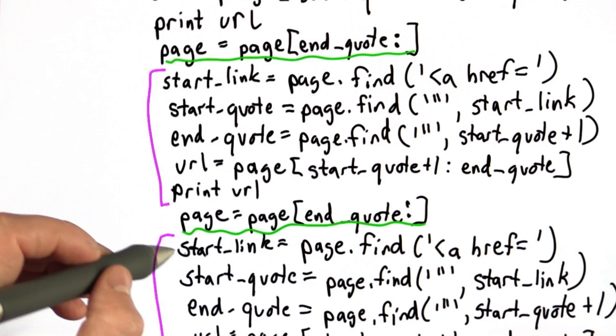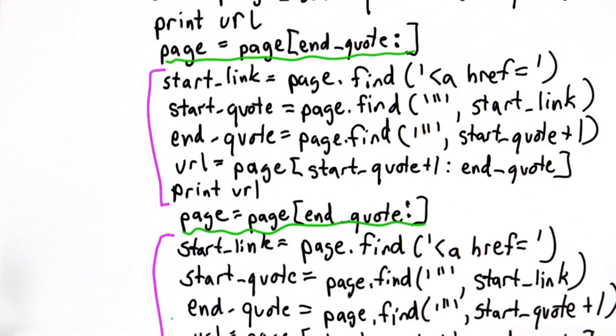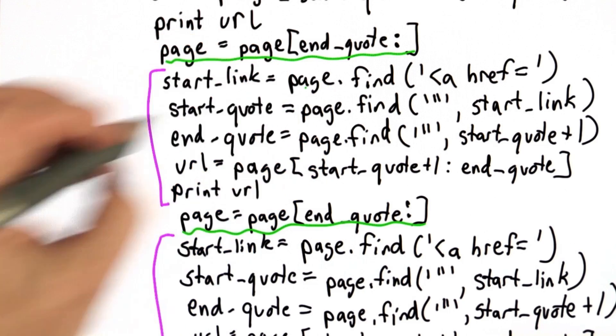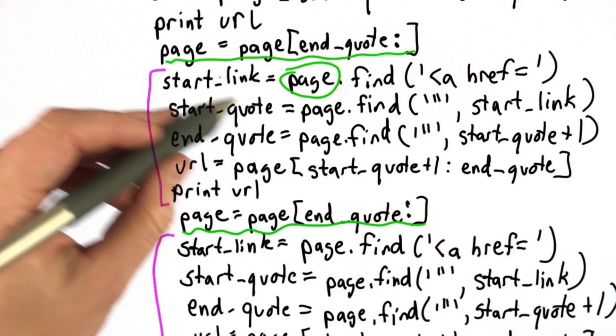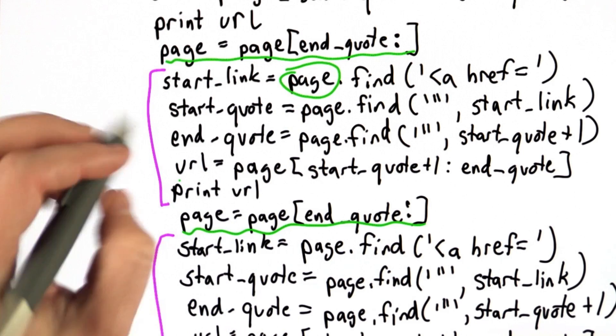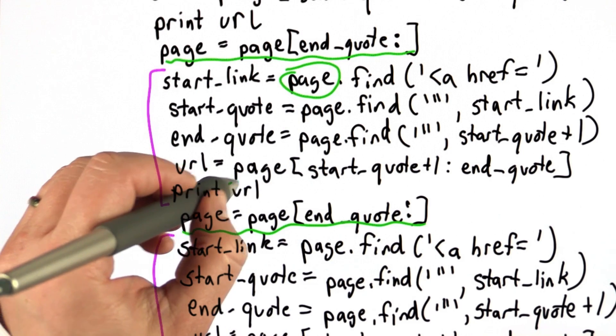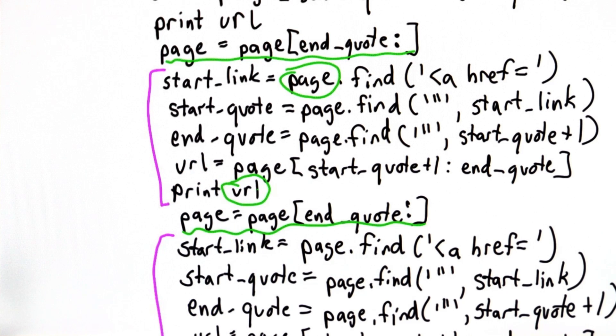So that means instead of having to type all this code over and over again, we want to make page an input. Page is the input, that's something that changes, and we want to make the URL, that's the result we want, an output.